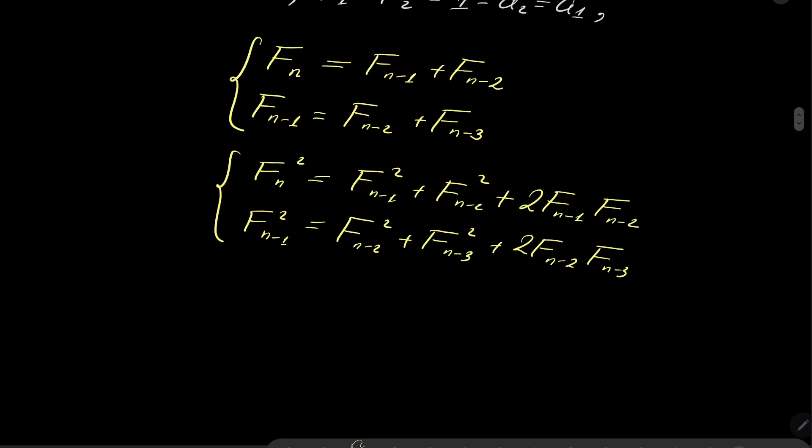And what I will do now, I will take these two equations and I will subtract them. And I will have F_n squared minus F_{n-1} squared equals F_{n-1} squared—notice that these two terms cancel after subtraction—minus F_{n-3} squared. And from these terms, I can factor out F_{n-2}.